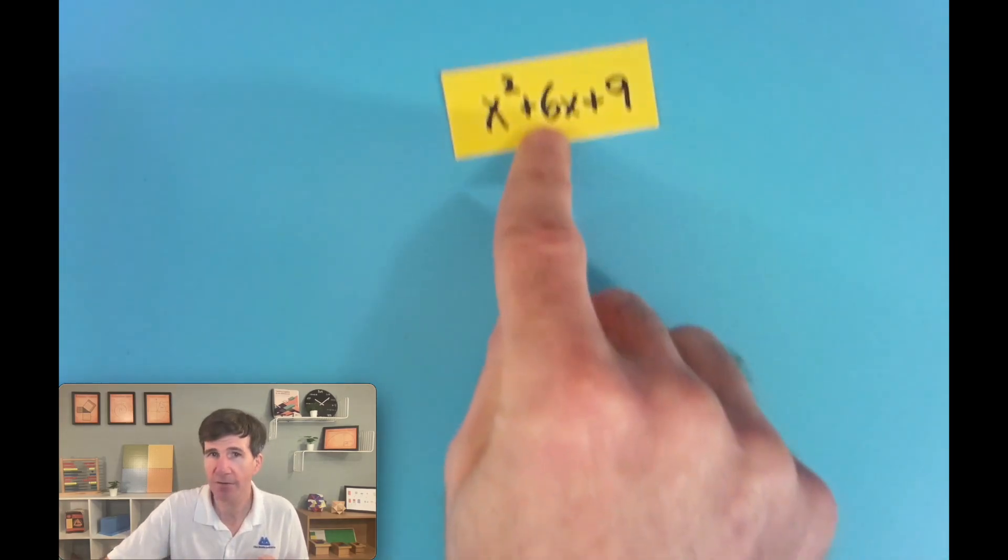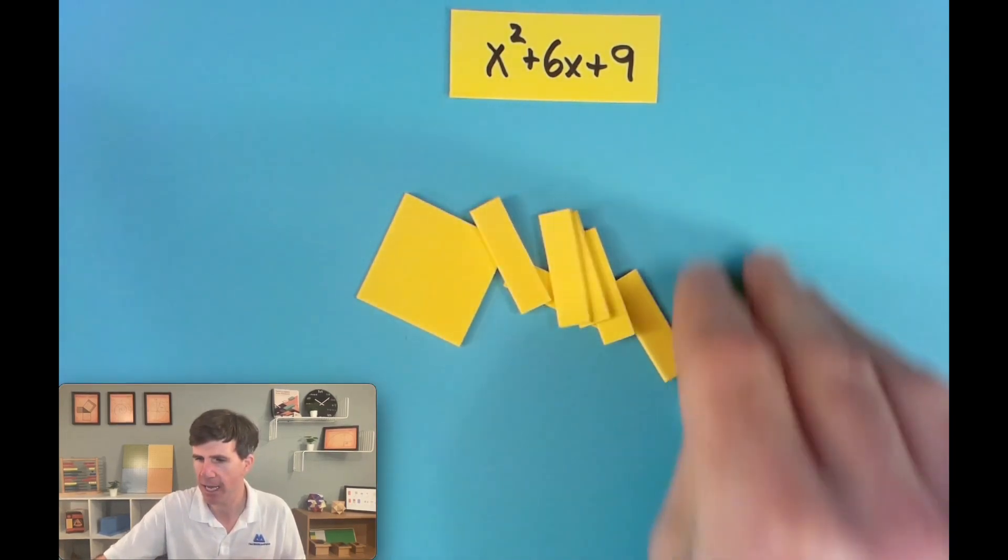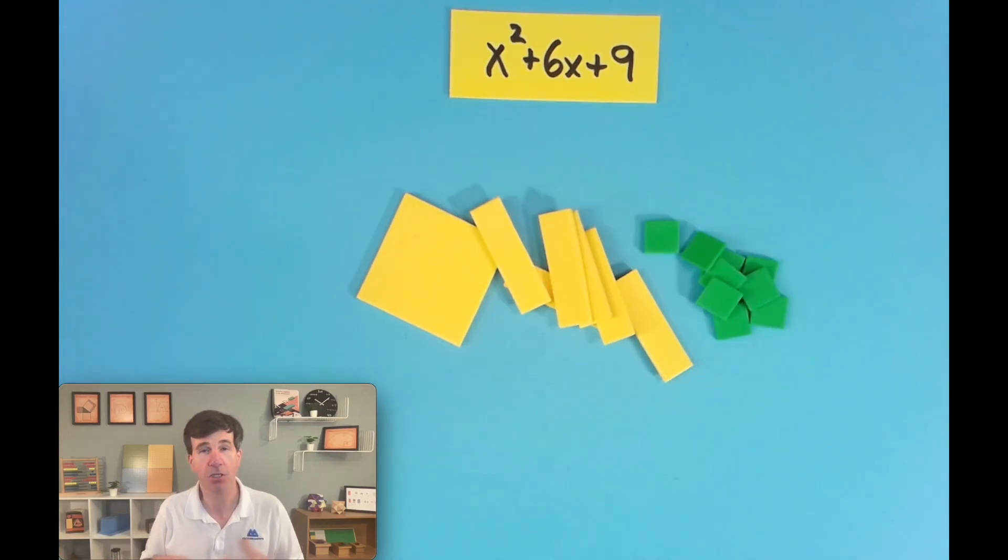But for now, we can just give students an expression such as this. We'll give them x squared plus 6x plus 9. With the materials, we'll ask them to make a rectangle out of these materials. Here's our x squared, here are 6x's and 9 units. See if you can make a rectangle out of these.